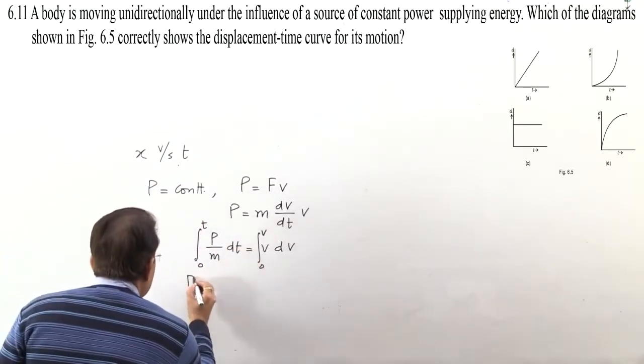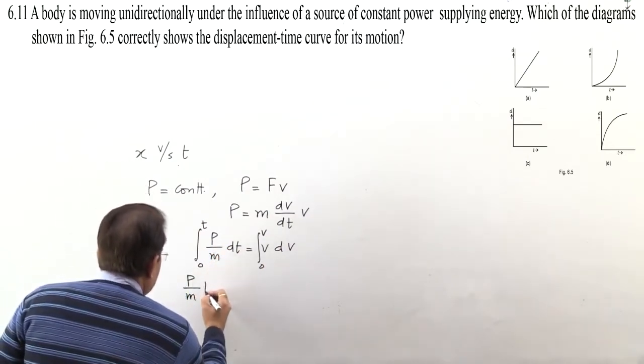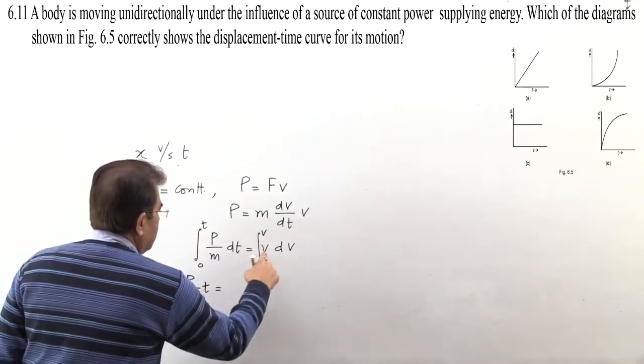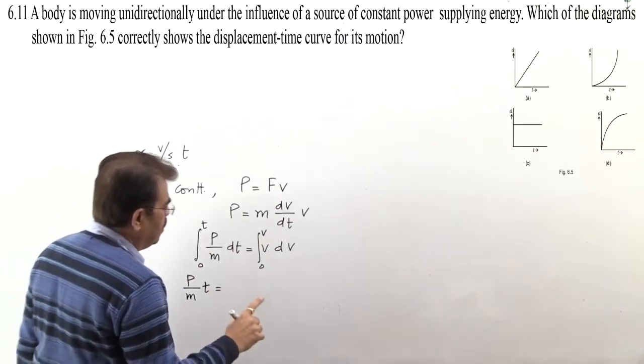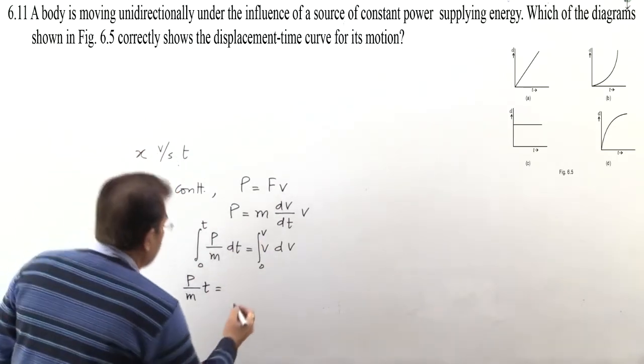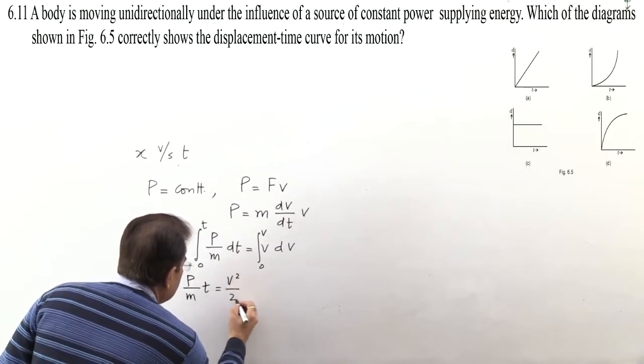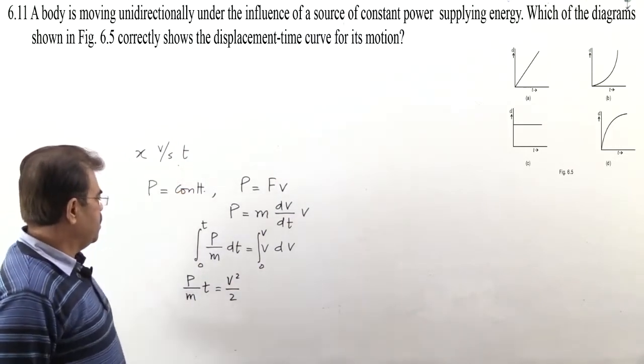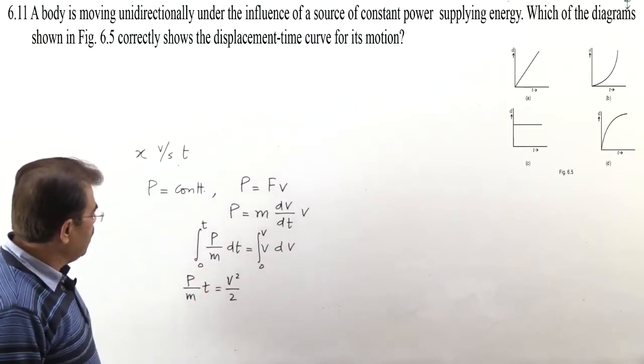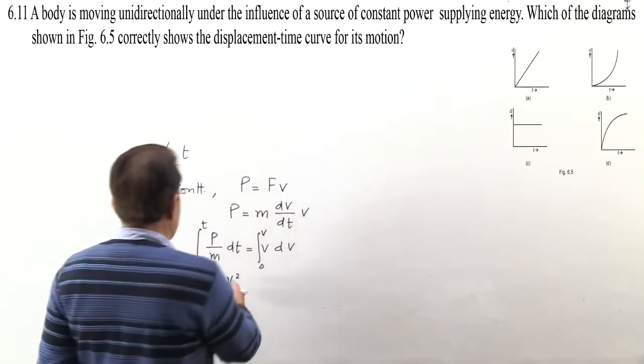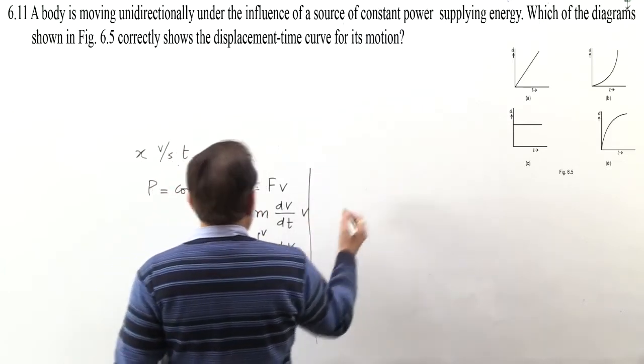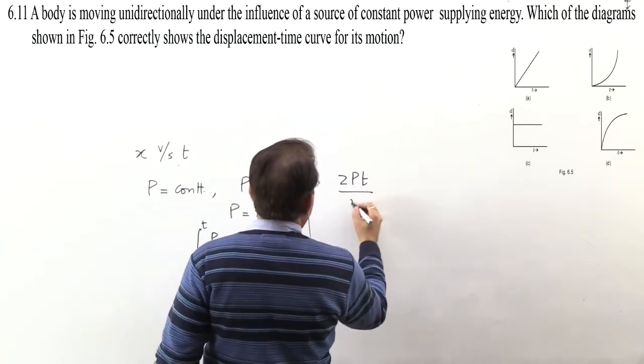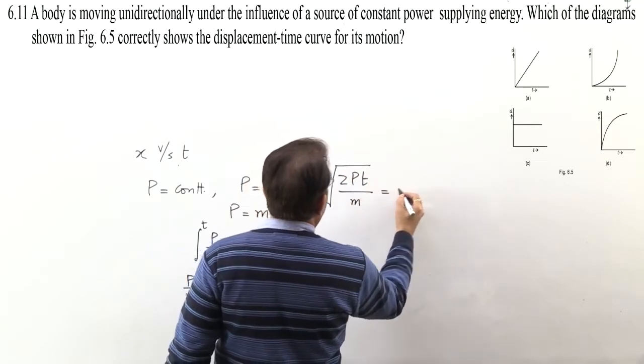Now p is constant, given. Mass is also constant. Here integral dt is t, limits give t. And here v square by 2. After substituting limits, v square by 2. In this way we got one relation. We need relation between x and t, but this is velocity and time relationship. So now we extract velocity from this. Velocity will be root of 2pt by m.